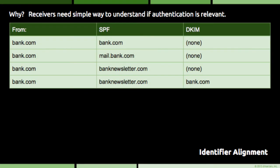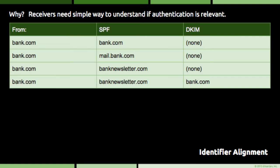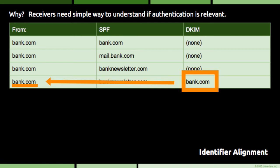In the fourth example, the email is the same but now we're seeing a DKIM signature for the first time. DKIM yielded an authenticated identifier of bank.com, making the example compliant with DMARC. The email receiver looks at the SPF identifier of banknewsletter.com, sees it has nothing to do with bank.com, and simply ignores it. Since the receiver is looking for any positive signal that the message really came from bank.com, and DKIM provides such a signal, the email passes the DMARC check.